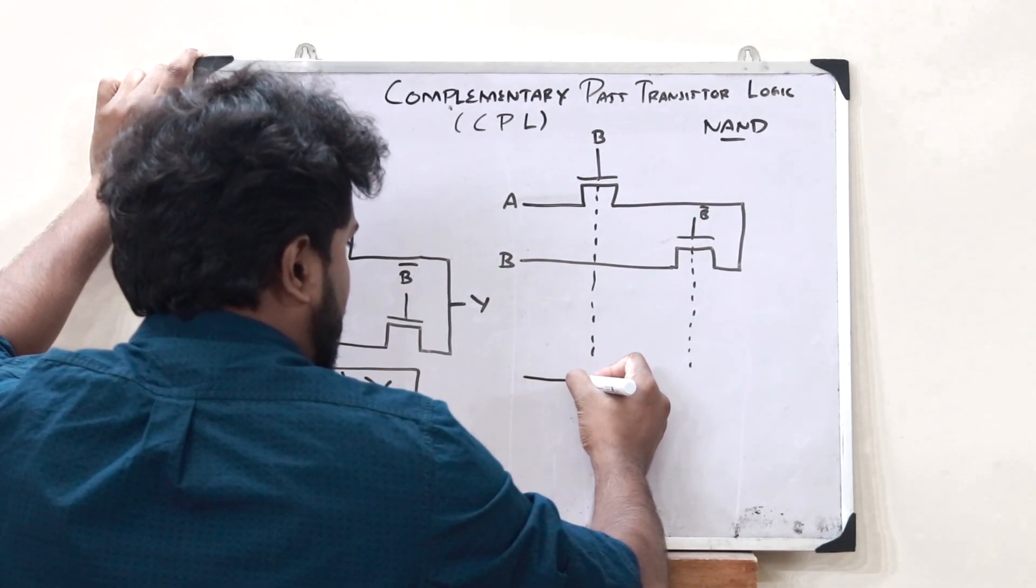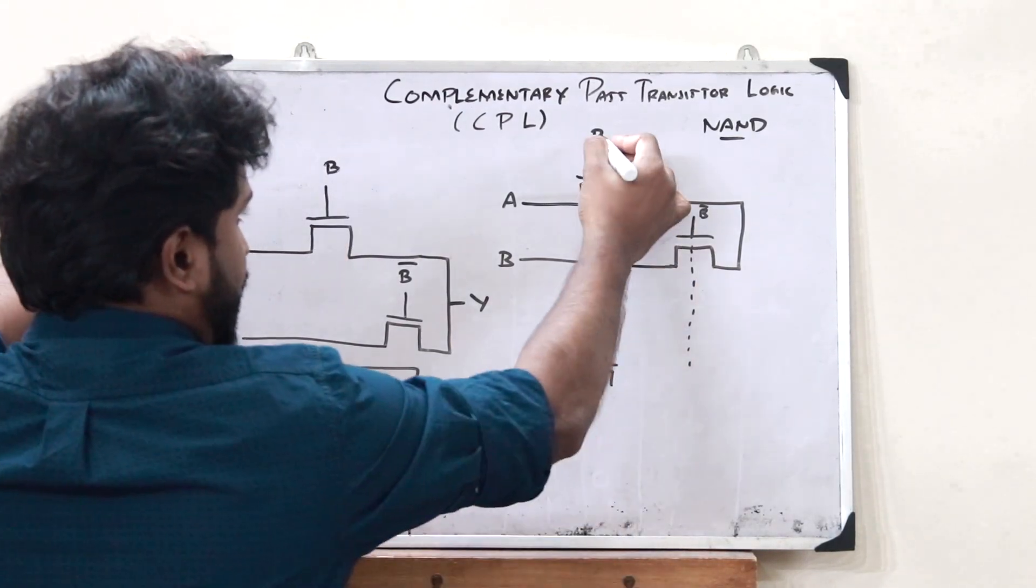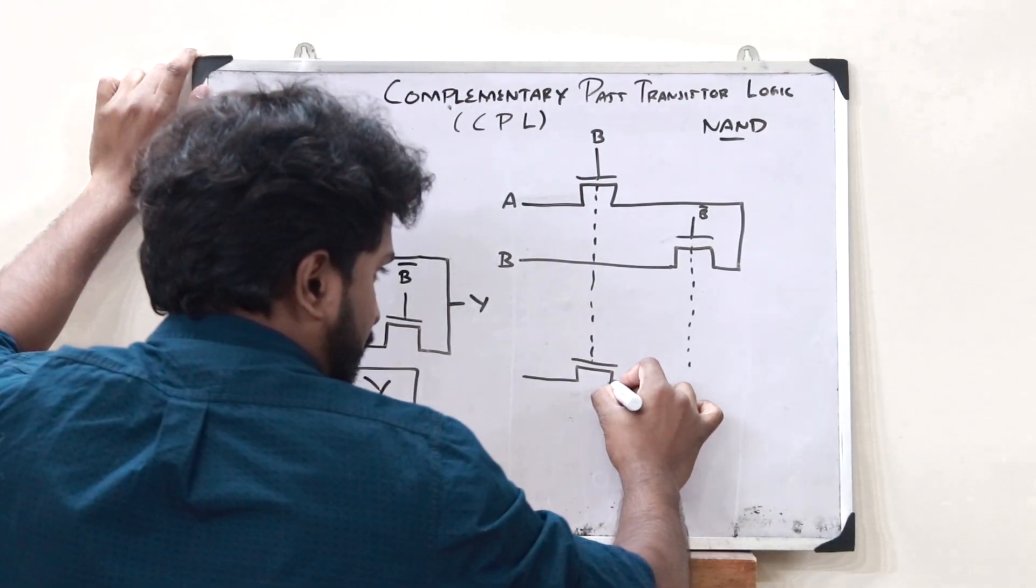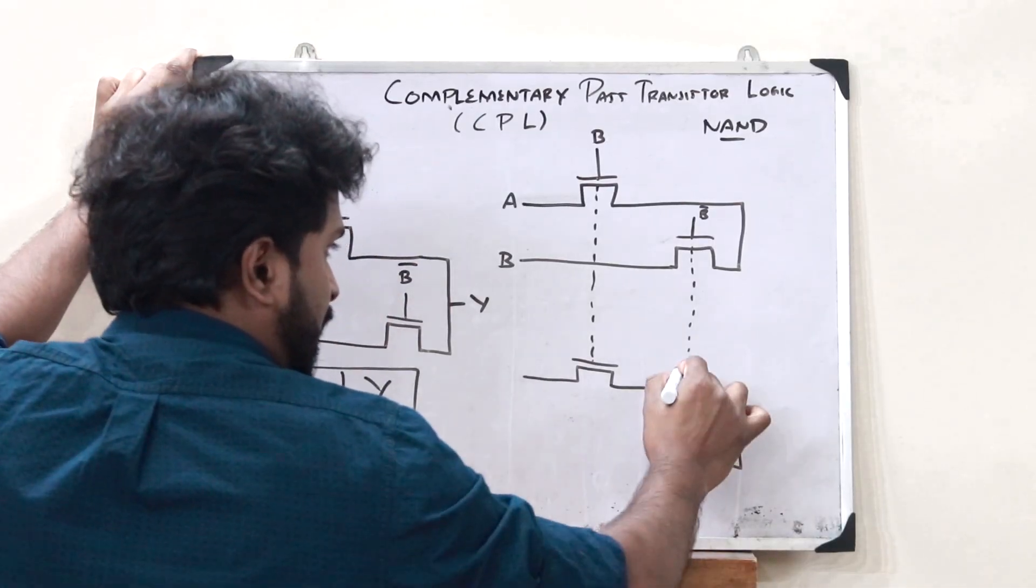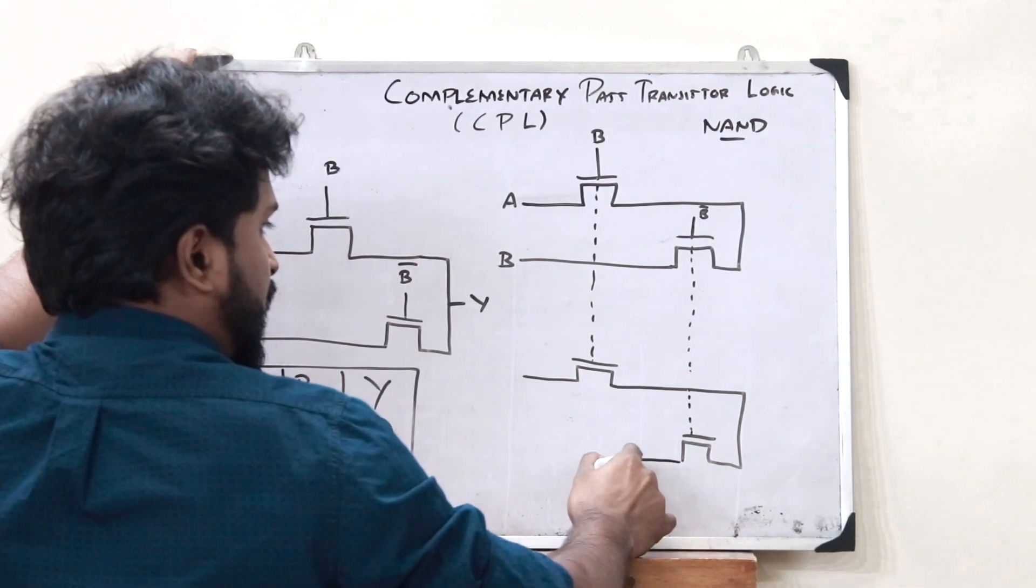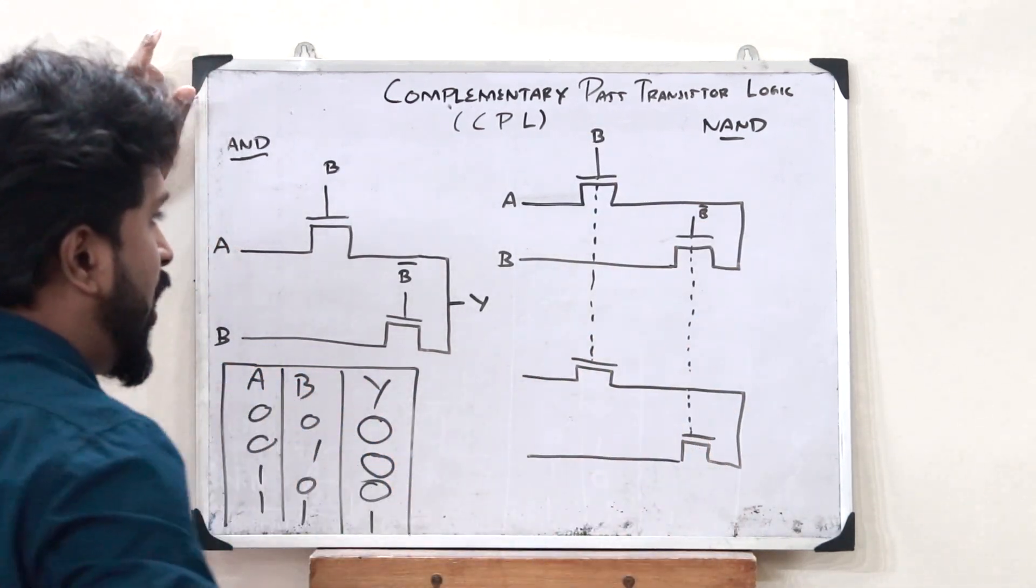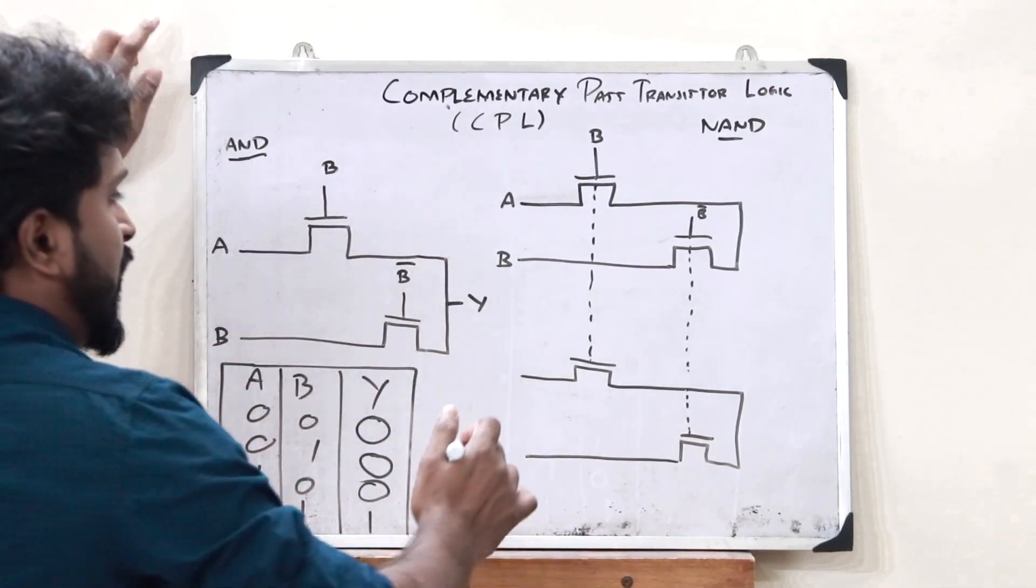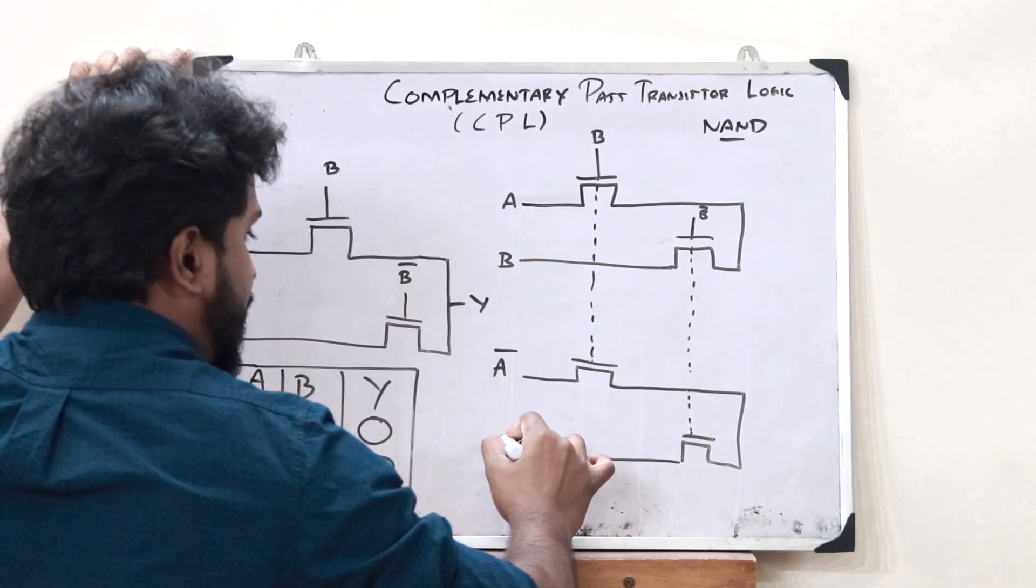And we would give this particular B as an input to this pass transistor. And here, as well, we would have another pass transistor like this. And this input, we would give it over here like this. So, here there is B and here there is B bar. And now, the interesting part is that at these two terminals, we would give A bar and B bar.